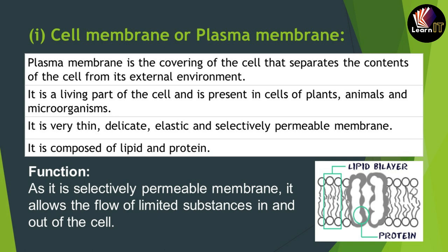Selectively permeable means it allows some molecules to pass from one portion to another. The plasma membrane is composed of two things: lipids and proteins. As you can see in the diagram on the lower right, there are two layers made up of lipid, with protein in between. The protein helps in the entry and exit of some molecules — it allows certain molecules to enter the cell and exit the cell.